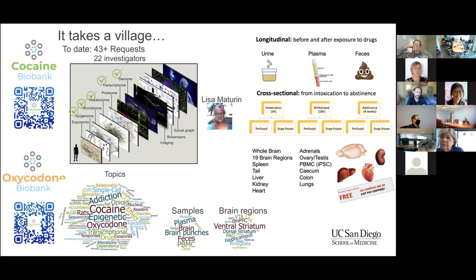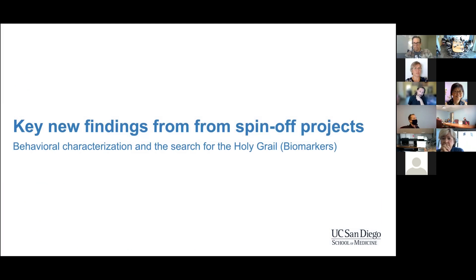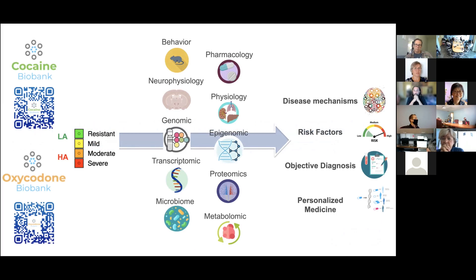For those who don't know, we have a bunch of samples at different states: intoxication, withdrawal, abstinence - both perfused and snap-frozen. We've now started doing brain punching, with a protocol on protocols.io where we punch about 20 different brain regions. These subpopulations are shipped to different investigators. We have a bunch of projects spanning from behavior to metabolomics, with every level of interpretation: genomics, epigenomics, microbiome, and physiology, all trying to identify biological markers.